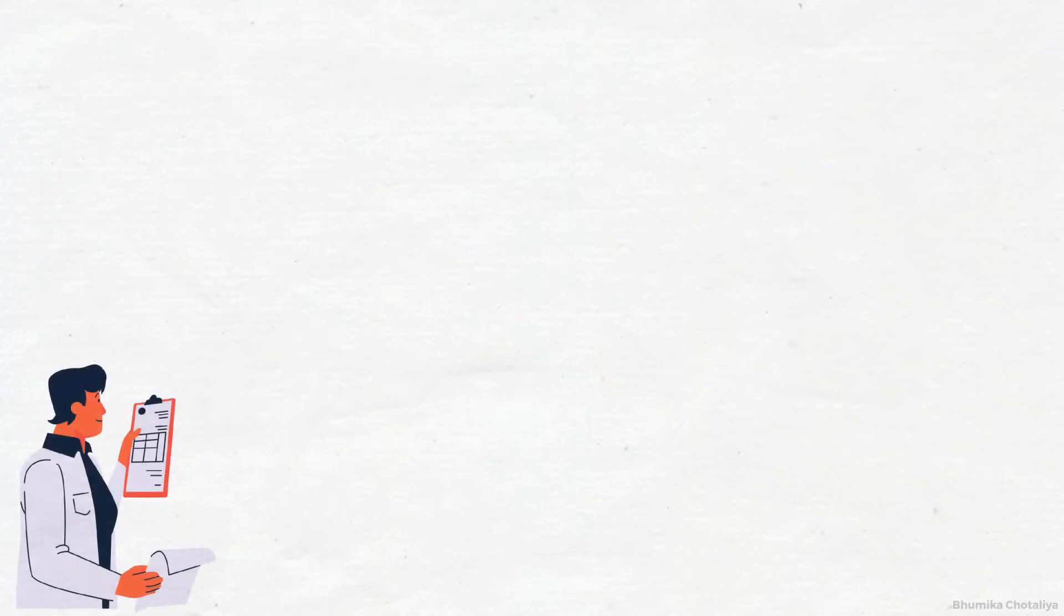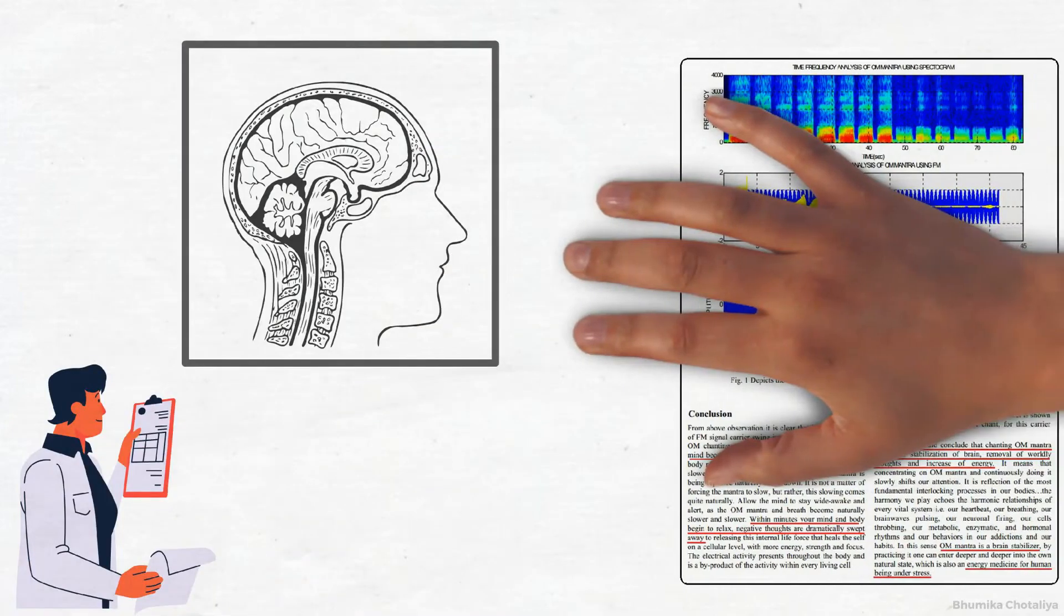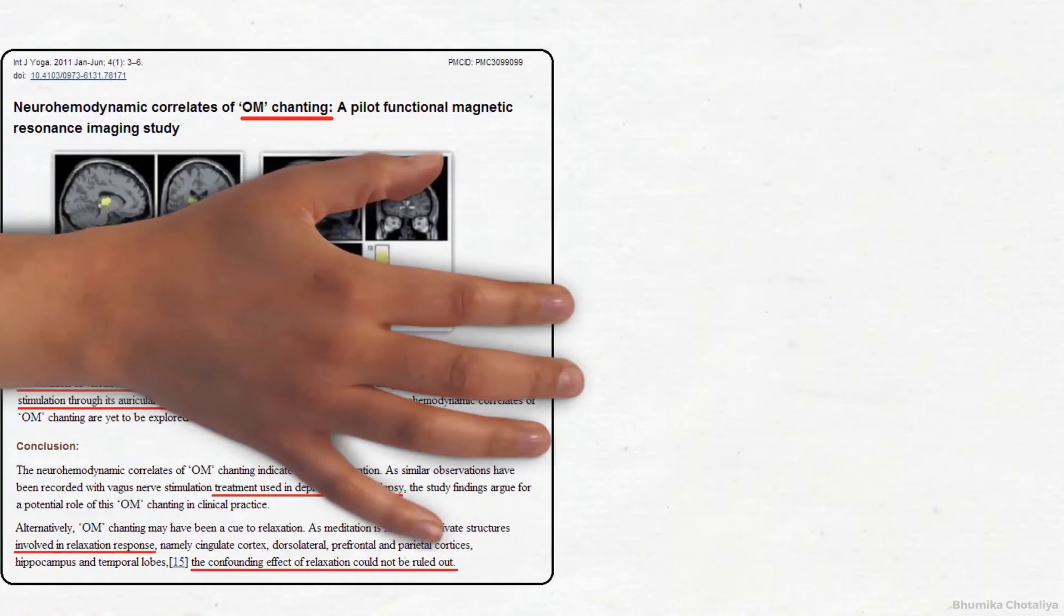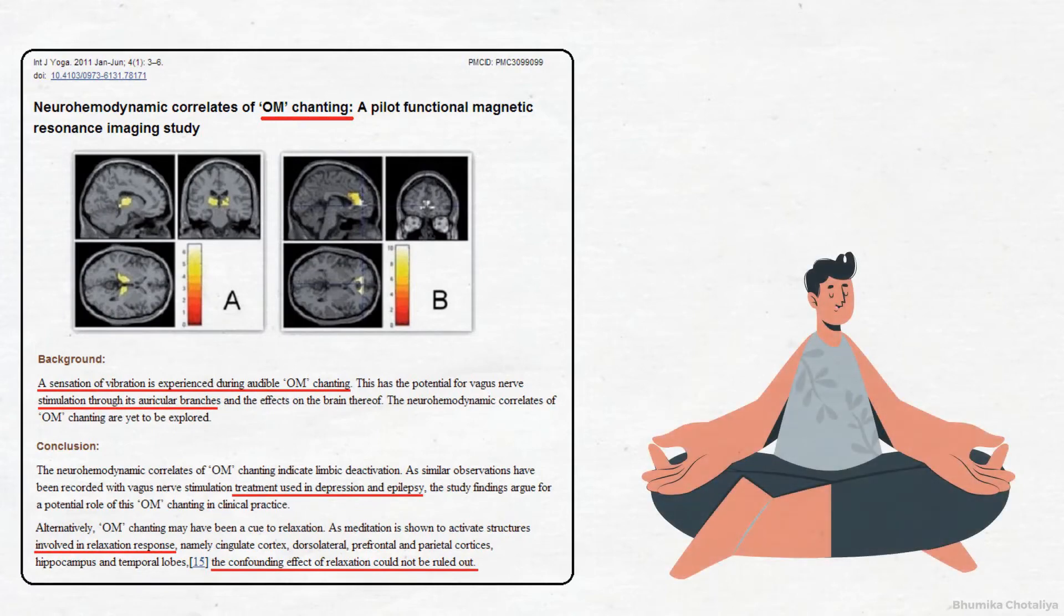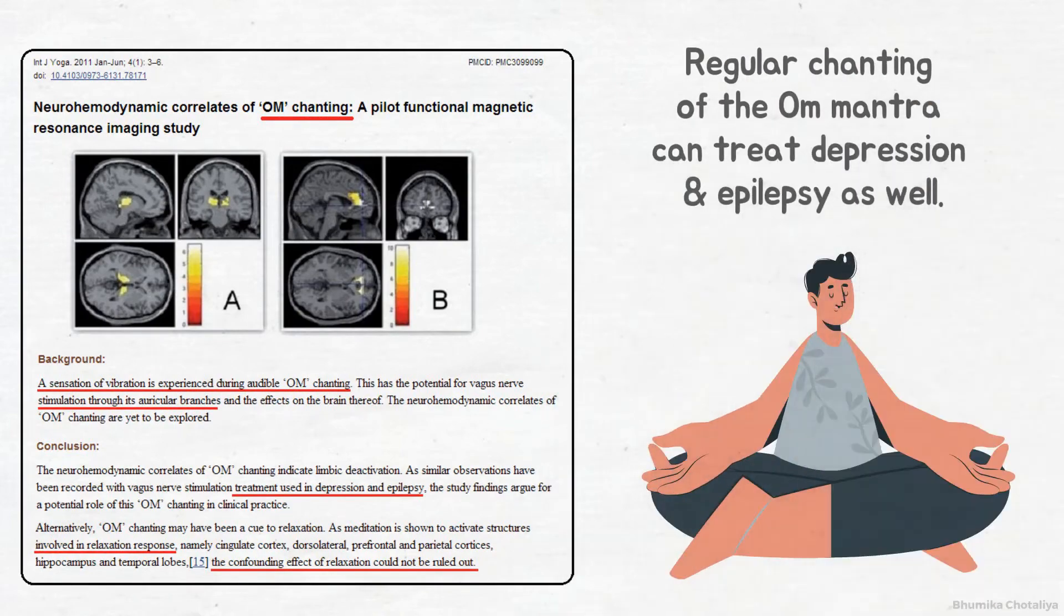In another instance, scientists conducted experiments to study the effect of the Om Mantra on the nervous system through repeated practice. Using sophisticated software tools, mathematical transforms were applied to raw samples of the chanting and similar results were observed. In another experiment, scientists analyzed functional magnetic resonance fMRI scans before and after Om Mantra chanting and concluded that regular chanting can treat depression and epilepsy.